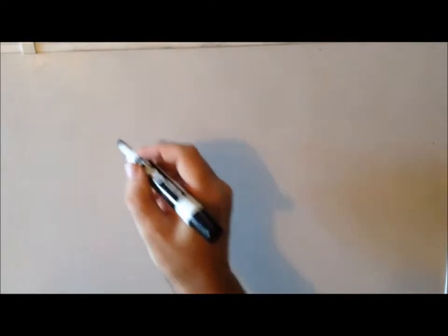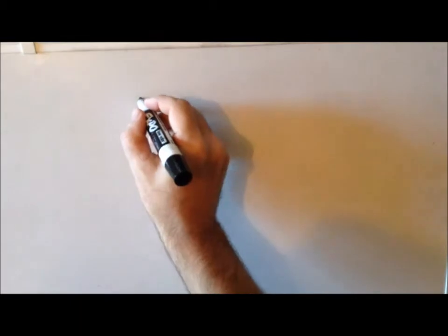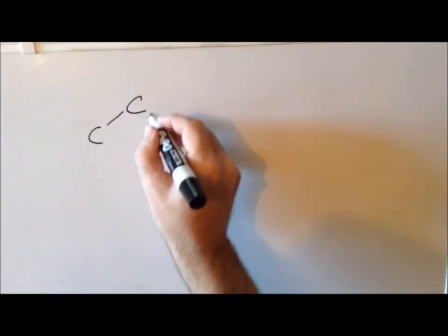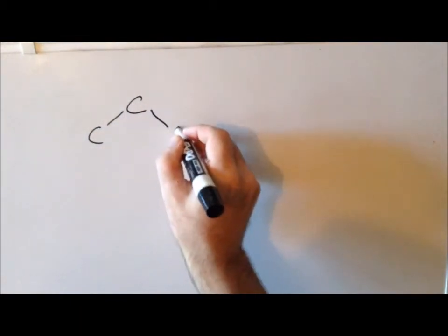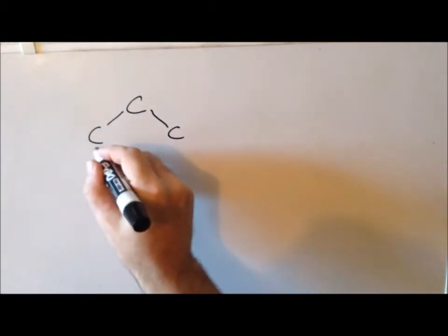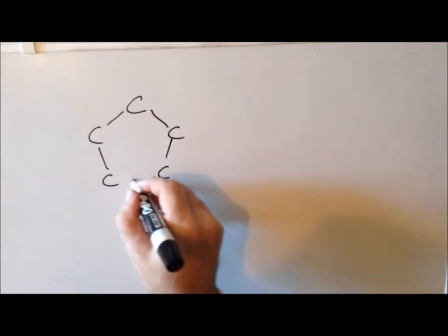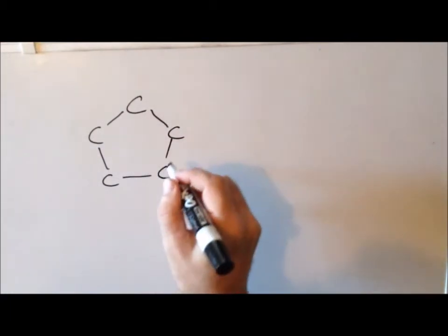In organic chemistry, we have an interesting organic molecule called cyclopentadiene, which has the following structure, shaped something like home plate.